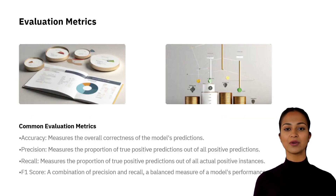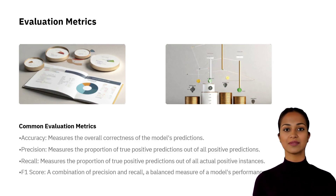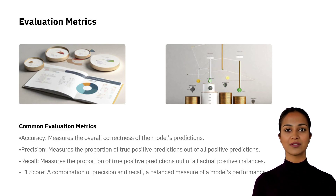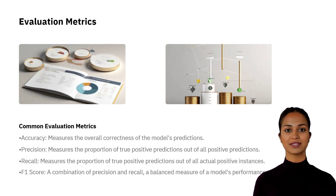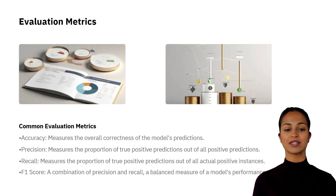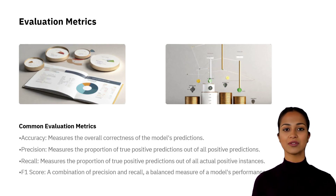Evaluating the performance of a model often involves using metrics such as accuracy, precision, recall, and F1 score. Accuracy assesses the overall correctness of the model's predictions. Precision quantifies the amount of true positive predictions out of all positive predictions. Recall determines the ratio of true positive predictions out of all actual positive instances. The F1 score combines precision and recall, creating a balanced measure of the model's performance.